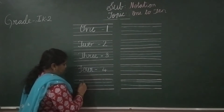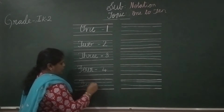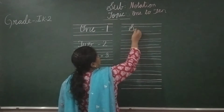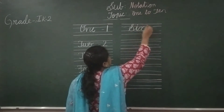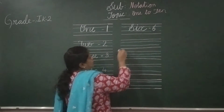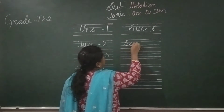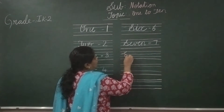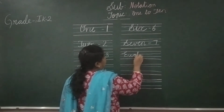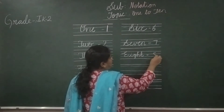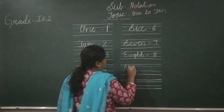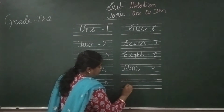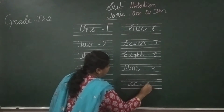F, I, V, E — 5. Next: S, I, X — 6. S, E, V, E, N — 7. E, I, G, H, T — 8. N, I, N, E — 9. T, E, N — 10.